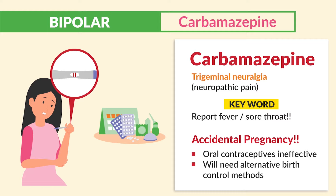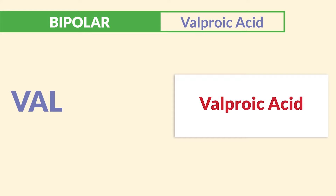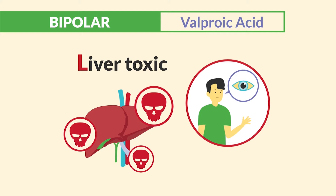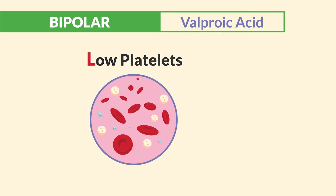Now next is V for valproic acid. Just think 'val' with a lot of Ls. L for liver toxic — we monitor for jaundice and liver labs, ALTs and ASTs. And L for low platelets, also known as thrombocytopenia.